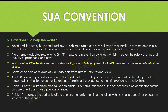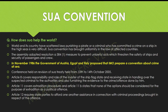An examiner in orals may ask: How does the SWA convention help the world? You should answer like this: The world and its countries have scattered laws — punishing a pirate or criminal who has committed a crime on a ship in the high seas is very difficult. The SWA convention has brought uniformity in the law of affected countries. The IMO Assembly adopted Resolution 584 to prevent unlawful acts threatening the safety of ships and the security of passengers and crew. In November 1986, the governments of Austria, Egypt, and Italy proposed that IMO prepare a convention about crime at sea. A conference for the revision of the SWA treaty was held from 10 to 14 October 2005.